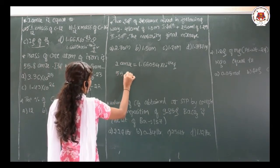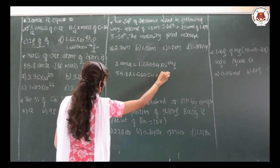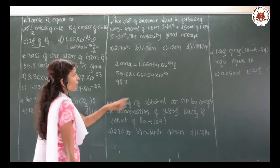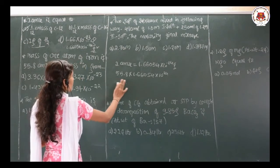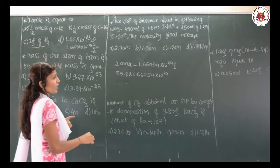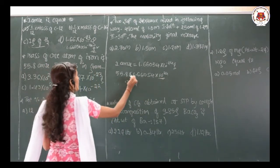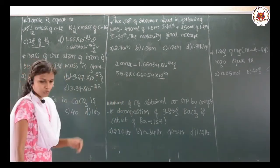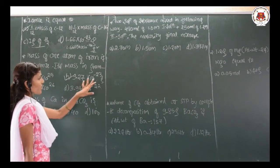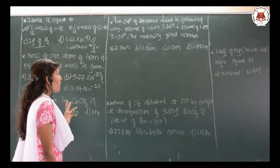Now I need to convert 55.8 amu into grams. So: 55.8 × 1.66054 × 10⁻²⁴. If you calculate this, you get roughly 92.7 × 10⁻²⁴, which is rewritten as 9.27 × 10⁻²³ gram. Keep in mind that 1 amu equals 1.66 × 10⁻²⁴ gram.